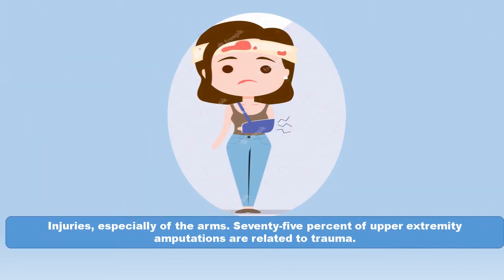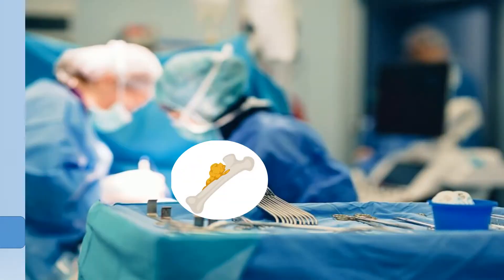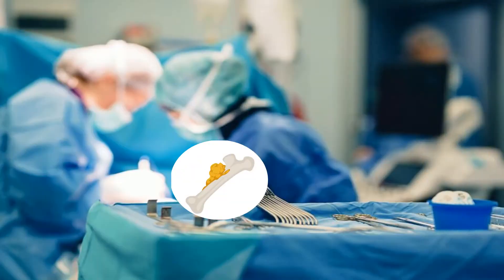Injuries, especially of the arms — 75% of upper extremity amputations are related to trauma — as well as surgery to remove tumors from bones and muscles, are also leading causes.